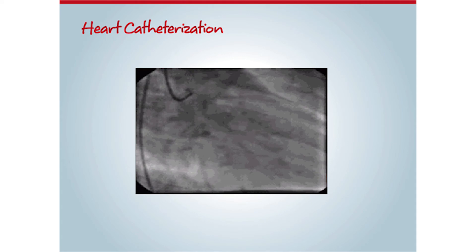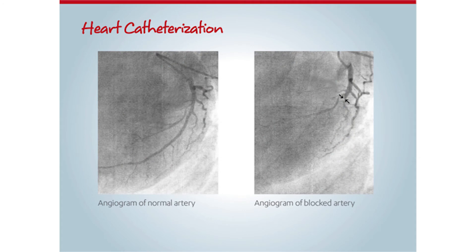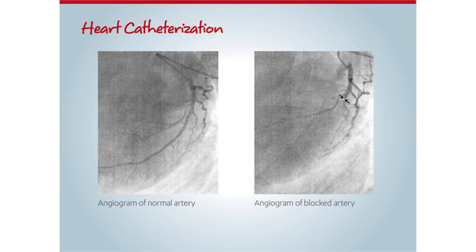Heart catheterization allows the flow of blood through the coronary arteries to be seen. During a heart catheterization, special dye is injected into the coronary circulation that enables the blood vessels to show up on film. By watching the dye move through the blood vessels, the physician can tell if an artery has become narrowed or completely blocked. The photo on the right shows a narrowing at the arrows, indicating a blockage has formed at that site.